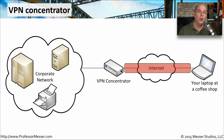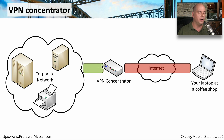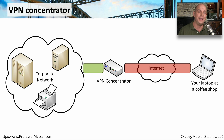the VPN concentrator will decrypt the information and send it in the clear into our corporate network. So if we're talking to a file server, we'll be able to communicate to that file server. When the file server responds back to you, it goes through the VPN concentrator, where it is again encrypted and sent back to you and decrypted on your laptop.